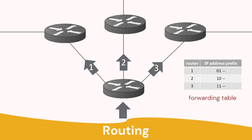Here's an example where we have a router and it has a choice — it can either go direction 1, 2, or 3 to the next router. Inside our router is a forwarding table, and that can use the IP address — the beginning of the IP address — to decide which route to take. That's how routers decide where to pass the packet on, and using that technique the packet will go from router to router, from source to destination.